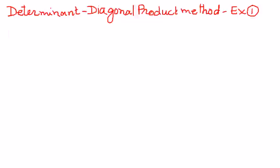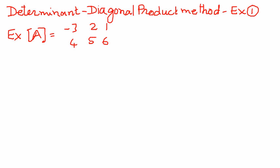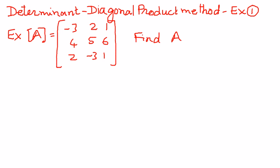Let's say we have an example of this type. Matrix A has the following elements: negative 3, 2, 1, 4, 5, 6, and then 2, negative 3, 1. We have a matrix of this type and we want to find the determinant of this matrix.